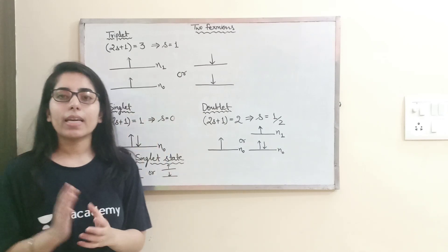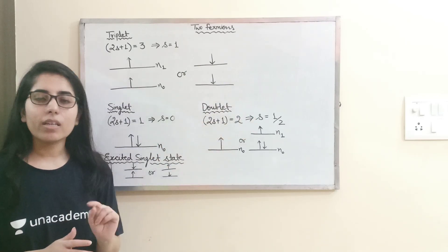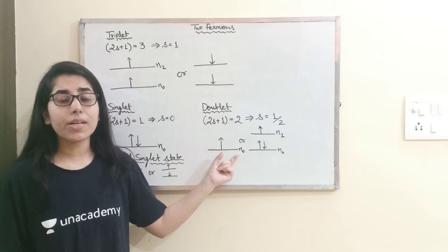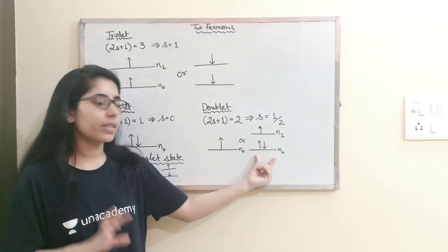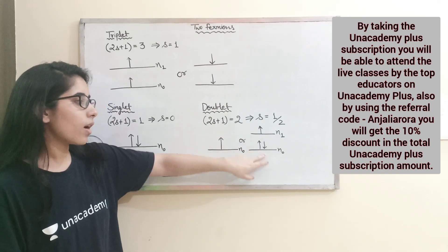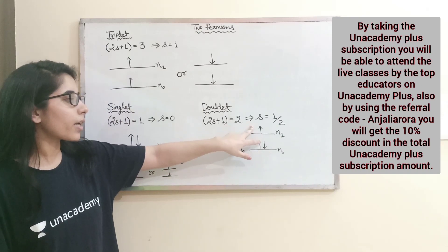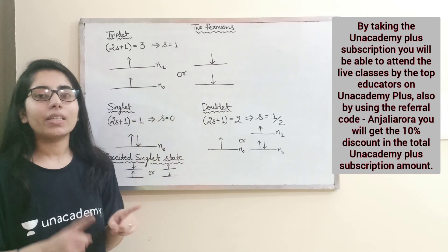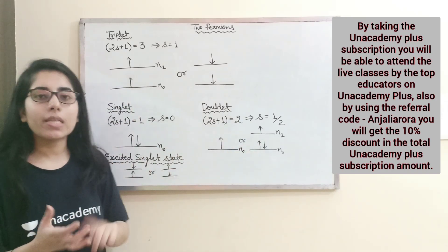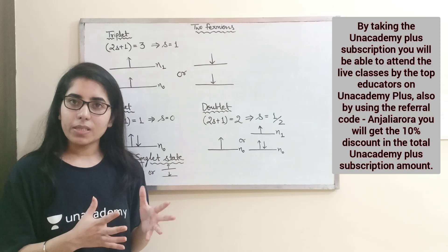For the doublet case, 2S+1 equals 2, which means S equals one-half. There should be one unpaired electron. It can be in the ground state itself, or if there are three particles, two will be in the same state with opposite spins — their total spin becomes 0 for the ground state — but the first excited state contributes spin one-half. That's how you consider the doublet case. So singlet, doublet, and triplet cases should now be clear, along with how you need to consider the spins in different cases.